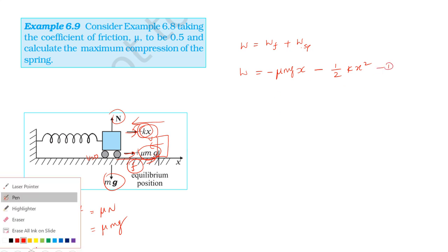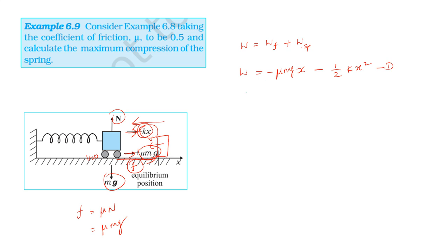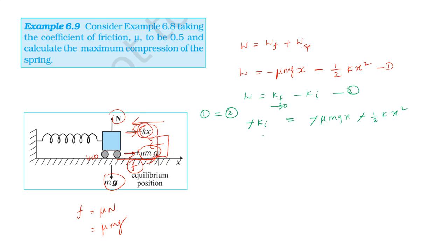According to the work-energy theorem, total work done equals final kinetic energy minus initial kinetic energy. Applying this, the initial kinetic energy is half m v squared. This equals mu m g x plus half k x squared. So: half m v squared equals mu m g x plus half k x squared.